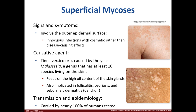Superficial mycoses only involve the outer epidermis. They're more of a harmless cosmetic issue rather than a disease. Most individuals exhibit mild scaling and interference with pigment production. Malassezia species, which are yeasts, are the causative agents. The mode of transmission is endogenous, as it is considered part of our normal flora.